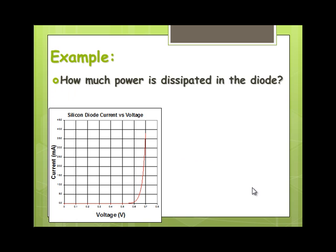So next question, how much power is dissipated in the diode? We don't know the resistance of the diode, but we can use P equals VI for the diode. So in this case, the voltage on the diode is 0.7. Therefore, power equals IV, current times 0.7, which is 0.036 watts.